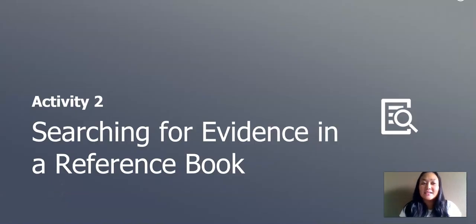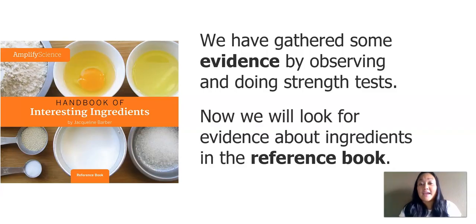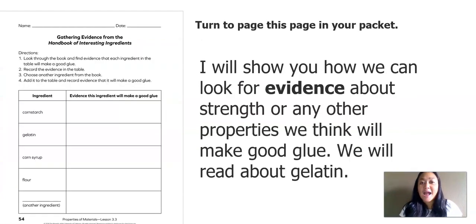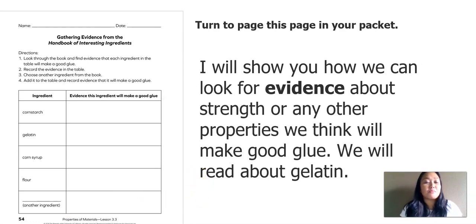In our next activity of our lesson, we will search for evidence in our reference book. We have gathered some evidence by observing and doing our strength test. Now we will look for evidence about ingredients in the reference book. This is the reference book that we will read about today — it is called Handbook of Interesting Ingredients. Use this page in your packet for today's lesson, or if you don't have this, go ahead and get some paper and something to write with.